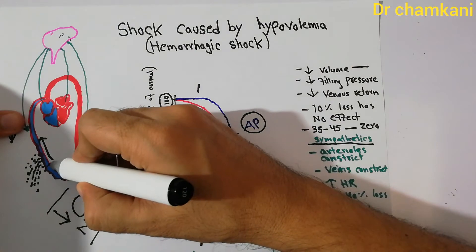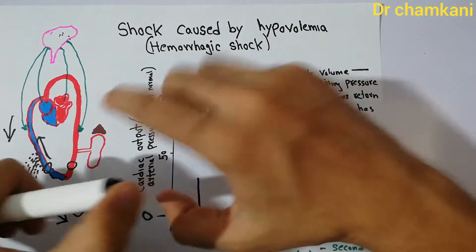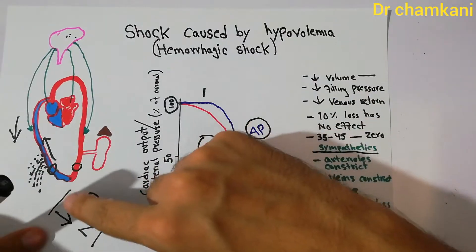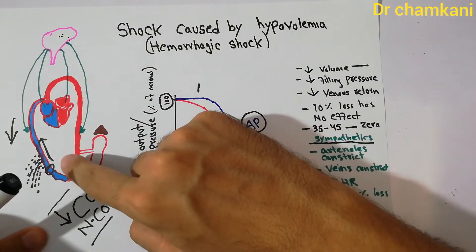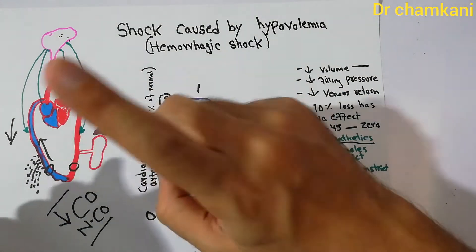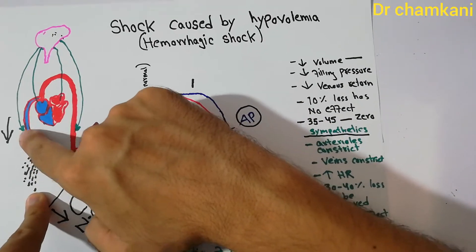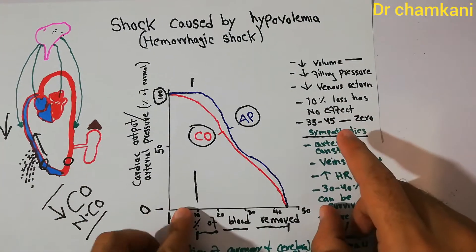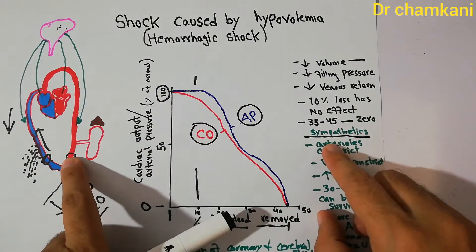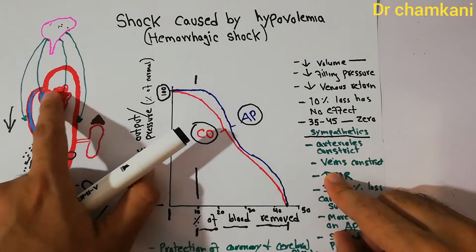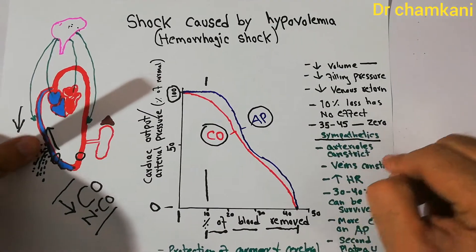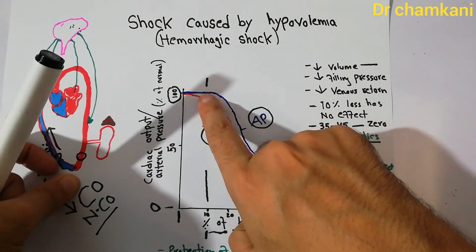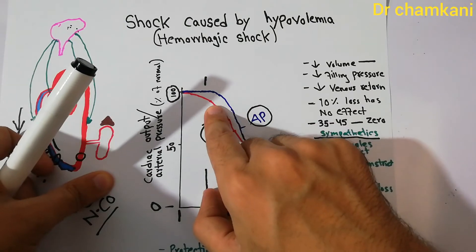Constriction of the arterioles increases resistance to blood flow, thereby increasing arterial pressure. Constriction of the veins pushes the remaining blood towards the heart, increasing venous return. So blood loss activates the sympathetic system, which causes arteriolar constriction, venous constriction, and increased heart rate. These three changes help maintain arterial pressure and cardiac output initially.